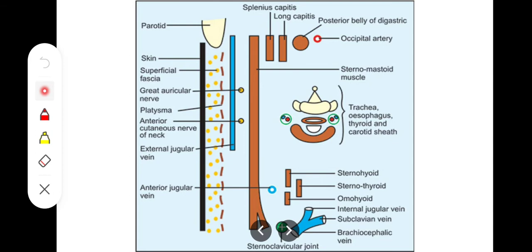The superficial cervical lymph nodes are also in the superficial relations. There are two types of lymph nodes: superficial and deep cervical lymph nodes. The cervical plexus itself is in deep relations, but there are some important cutaneous branches which are considered superficial relations.